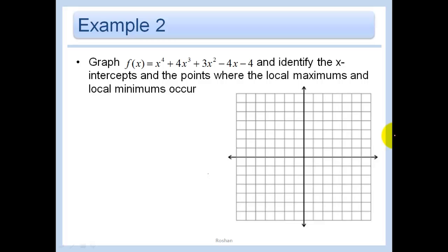In this problem, we're going to graph f of x equals x to the fourth plus 4x cubed plus 3x squared minus 4x minus 4, and identify the x-intercepts and the points where the local maxes and mins occur. So in this problem, it is not factored down for me, and I can't really factor it, so I'm going to have to use my calculator. So go get your calculator.